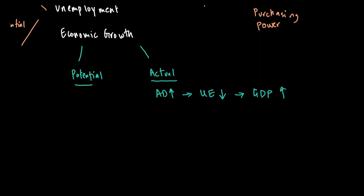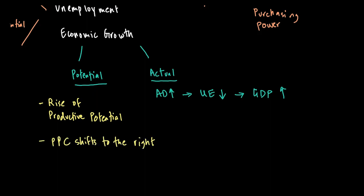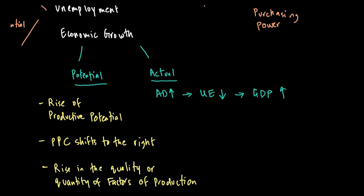When it comes to potential economic growth, we're looking at a rise in the productive potential of an economy. This happens when the PPC shifts to the right, which means there is a rise in the quality or quantity of factors of production. Both actual and potential economic growth are desirable in an economy as they can lead to higher welfare for individuals of a society.